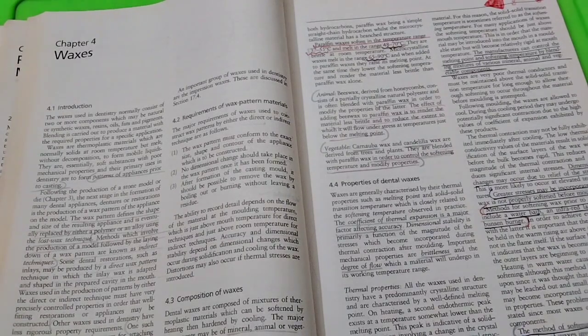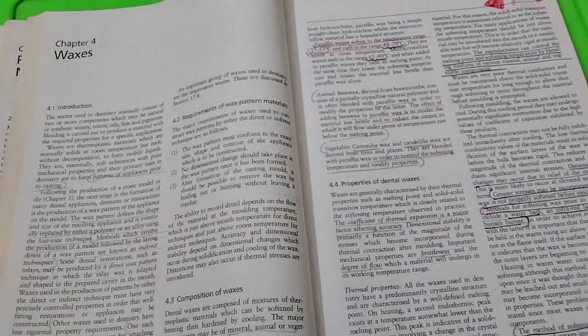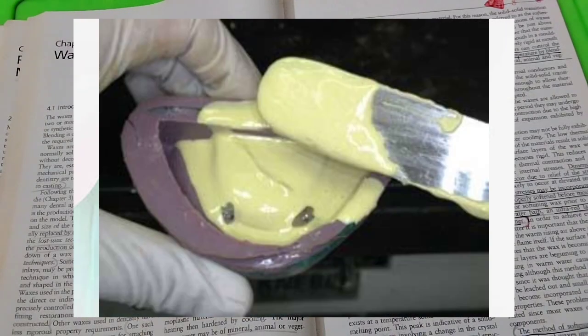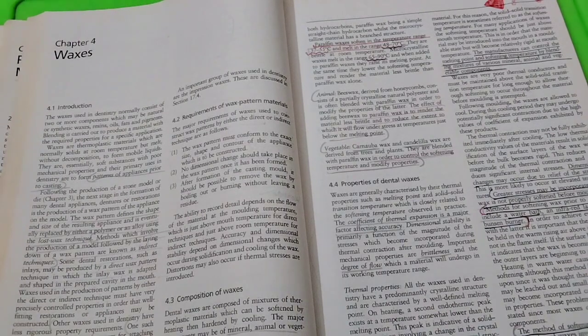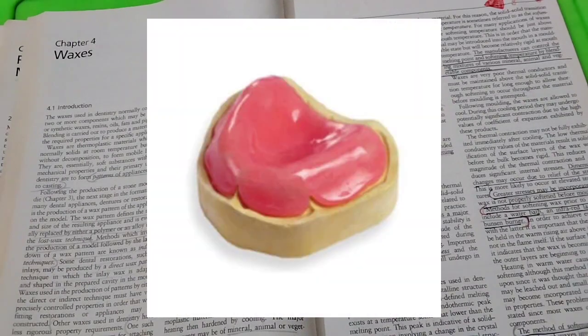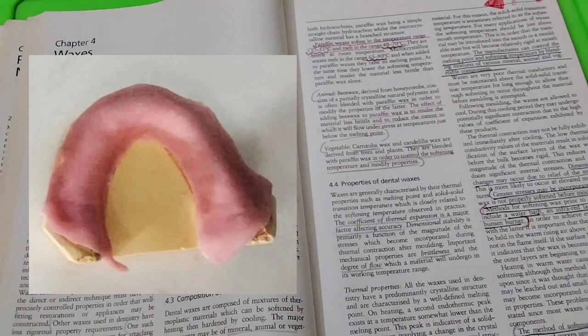We are discussing the case that we have discussed. We are done with impression, model pouring, and base forming. Now we are going to make the next step. We have to make base plate, and we can make it with acrylic and wax.